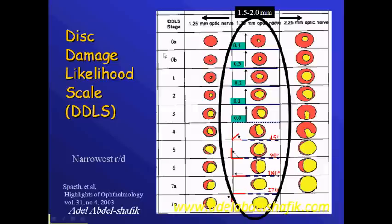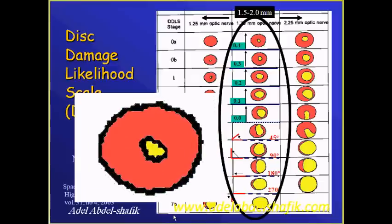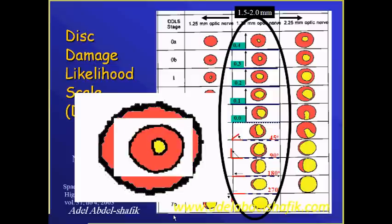You see this classification starts from one up to ten. They start to measure the neural rim tissue all around to figure out the narrowest part of the neural rim tissue, and they base their classification on this narrowest area.